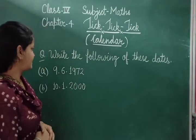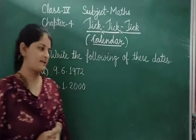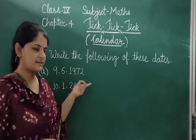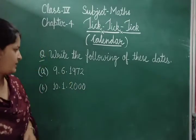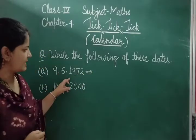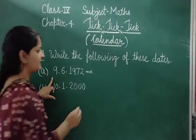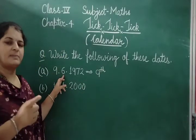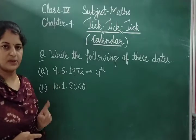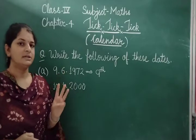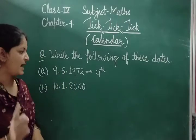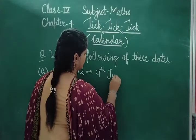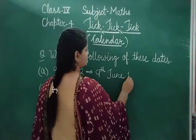Now the next question is: write the following dates in full form — the reverse of the previous question. In short form we wrote dates, now we expand them. The first question is 9/6/1972. So 9 becomes 9th, and 6 — the 6th month is June: January, February, March, April, May, June. So the answer is 9th June 1972.